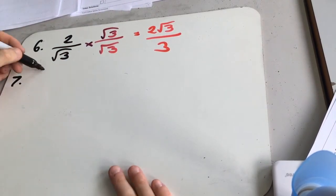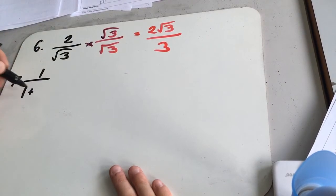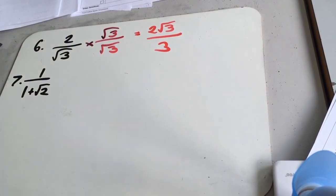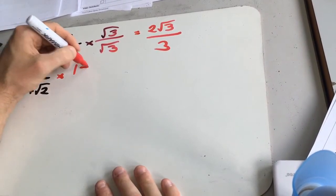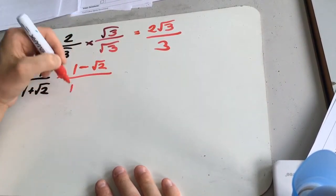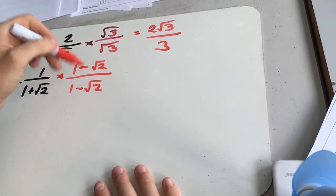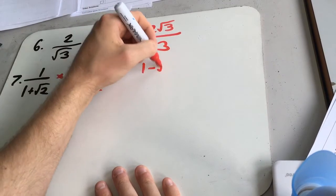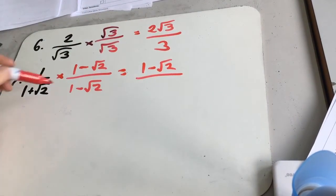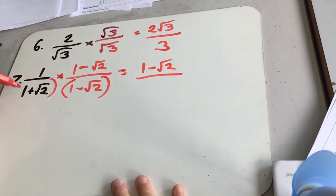Question 7. Trying to rationalise 1 over 1 plus root 2. So to rationalise a fraction like this, you want to times by the negative version of what's on the denominator. So we're going to times it by 1 minus root 2 over 1 minus root 2. Again, make sure, same thing on the top and on the bottom. So 1 times this, we get 1 minus root 2 on top. On the bottom, we're going to times this out as if it's a quadratic. So 1 times 1 is 1.